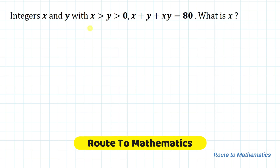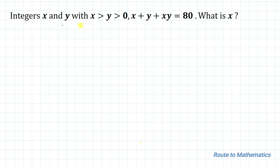Hello everyone, welcome to Root 2 Mathematics. In this video we are going to solve an interesting olympiad question. The given question is: integers x and y with x greater than y greater than 0, and we have x plus y plus xy equals 80. We are asked to find the value of x.